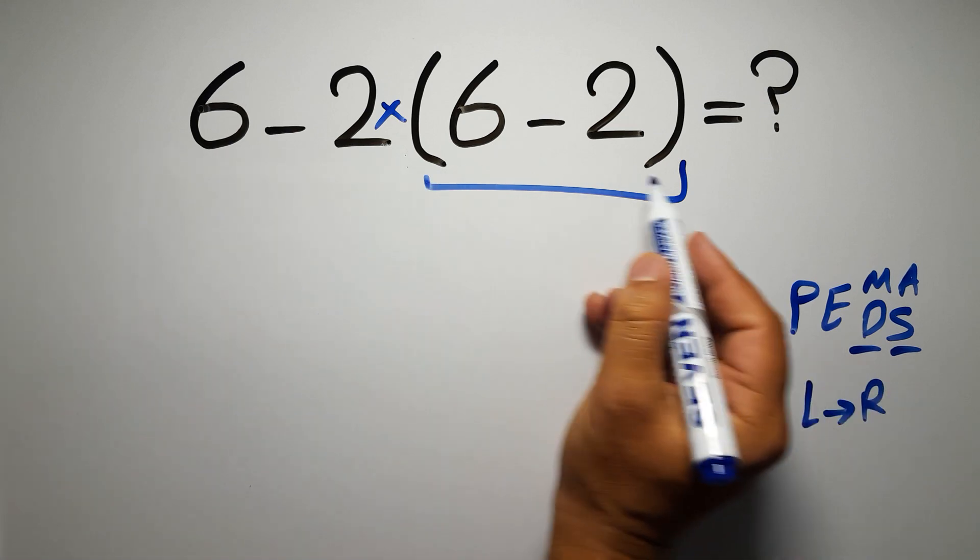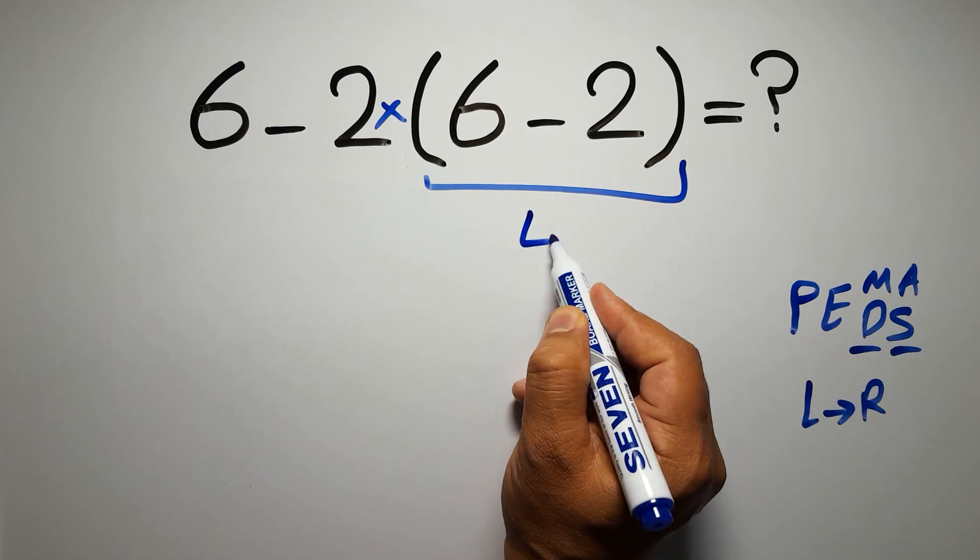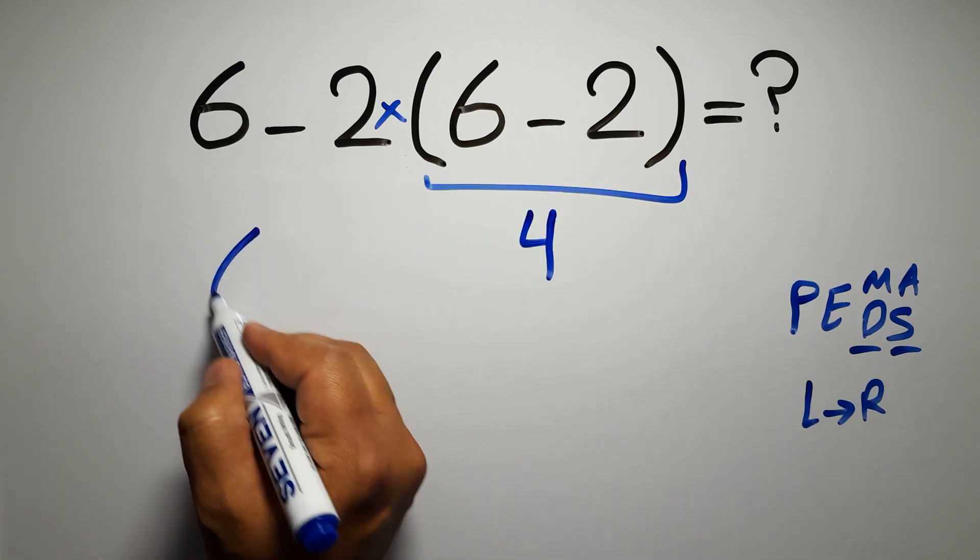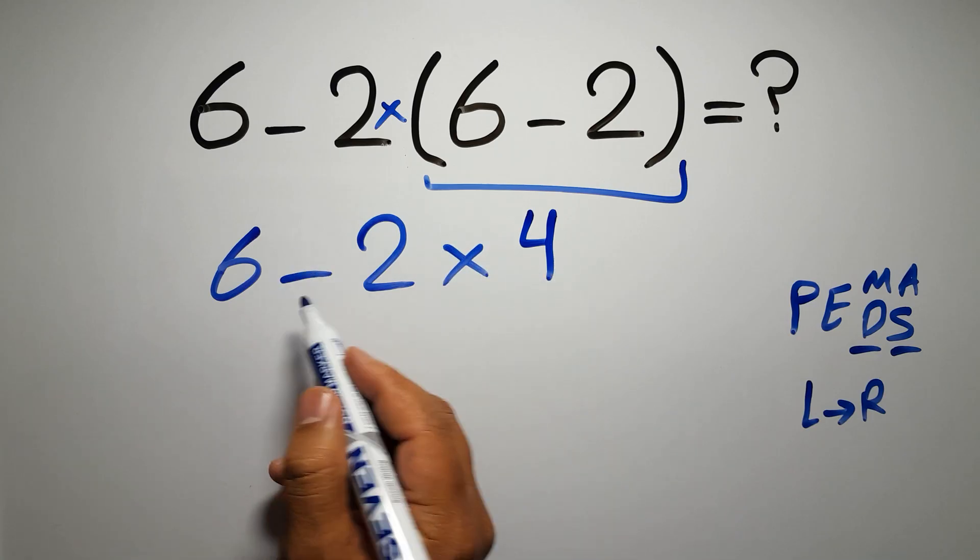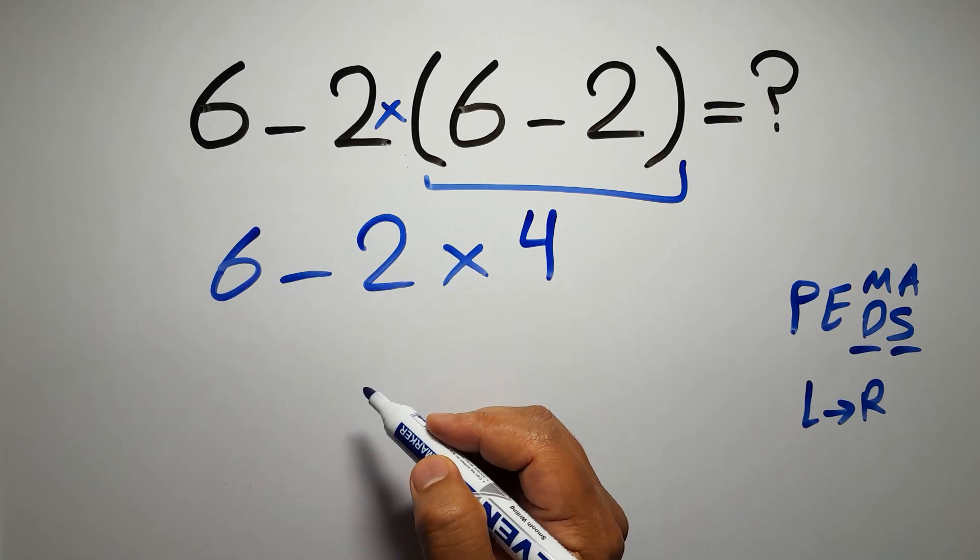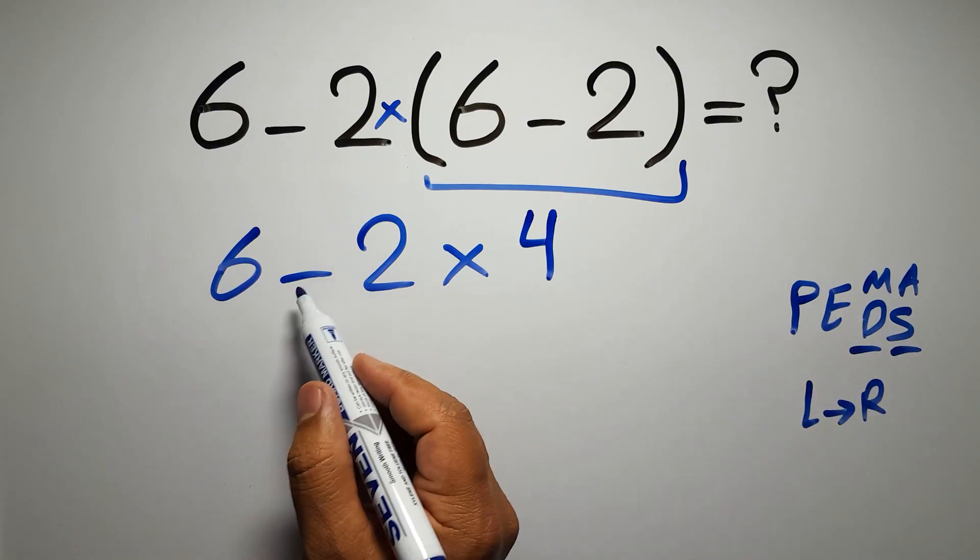So first, this parentheses: inside this parentheses we have 6 minus 2 which equals 4. So 6 minus 2 times 4. Now we have one subtraction and one multiplication. According to PEMDAS, multiplication has higher priority than subtraction.